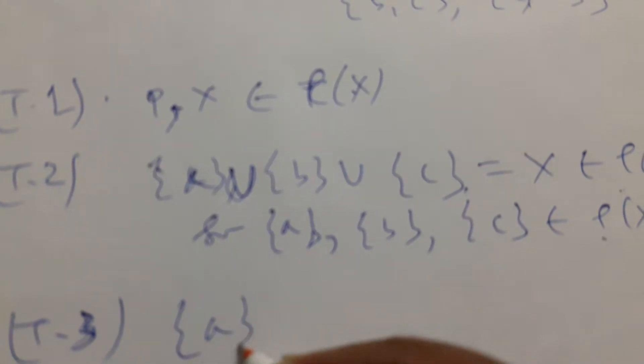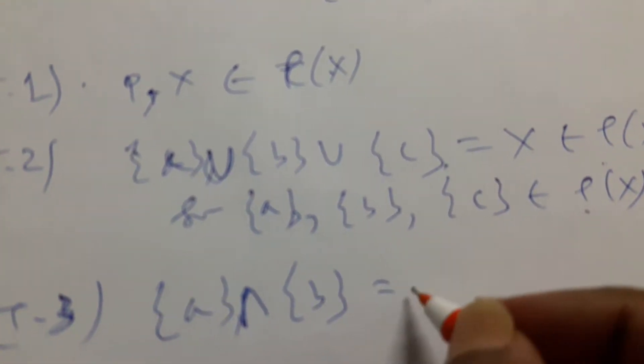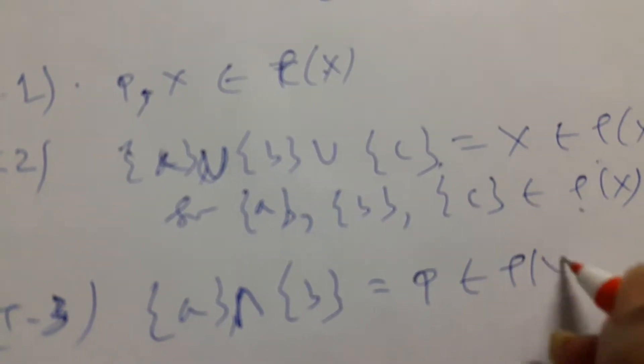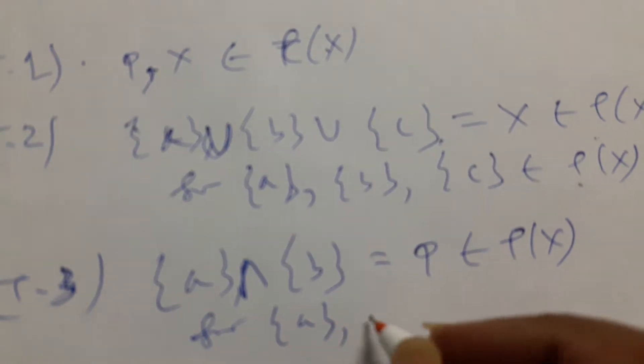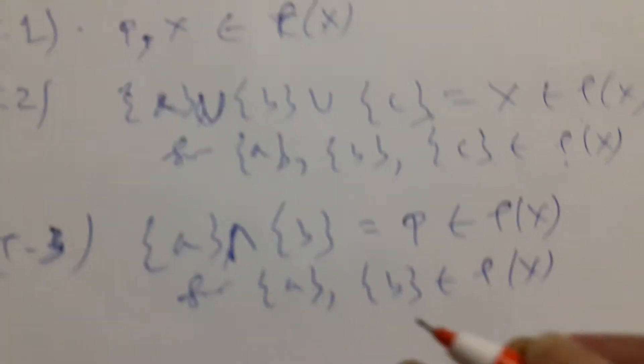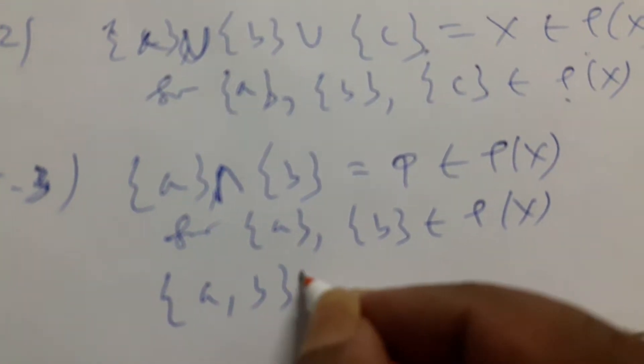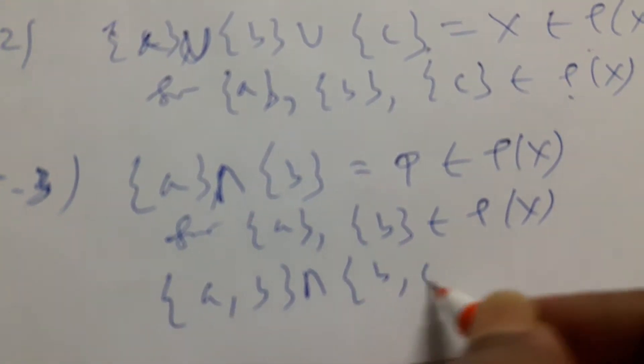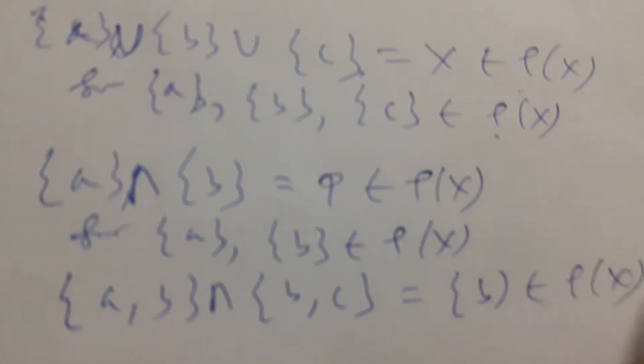For any two members, like {a} ∩ {b} equals φ, which belongs to ρ(X). Also we find {a,b} ∩ {b,c} equals {b}, which also belongs to ρ(X). Therefore, T3 is satisfied.